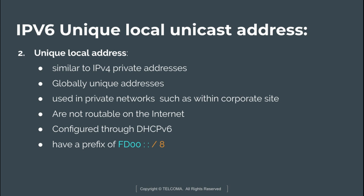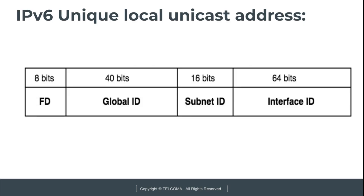Unique local addresses are configured using DHCPv6. The prefix is fd00:: with a prefix notation of /8, where fd00 is the prefix. The original IPv6 RFC defined this private address class as 'site local.' The format is: the first 8 bits represented as fd00, next 40 bits for the global ID, 16 bits for the subnet ID, and the last 64 bits for the interface ID.